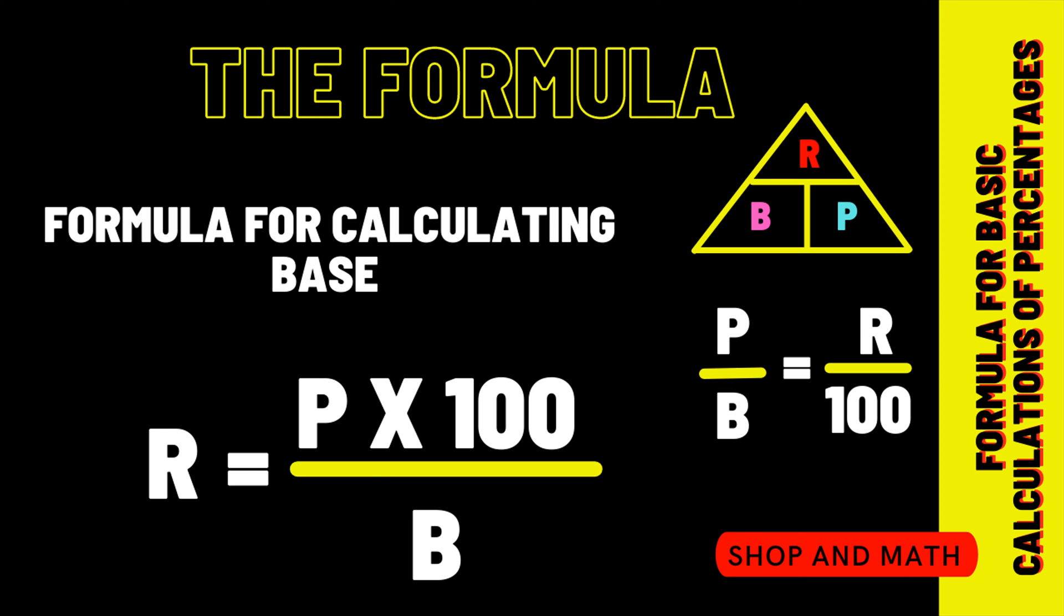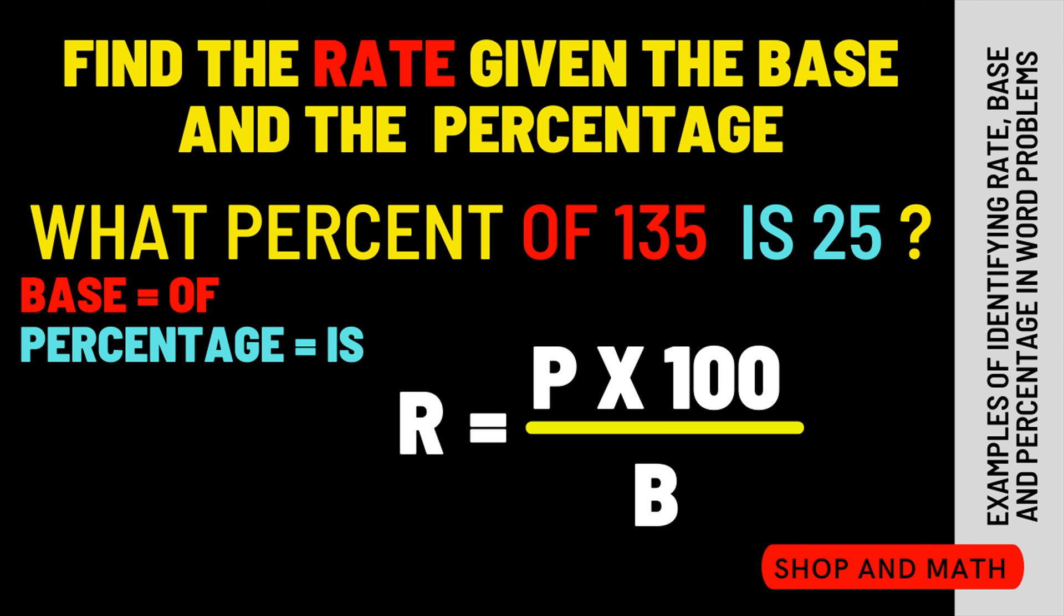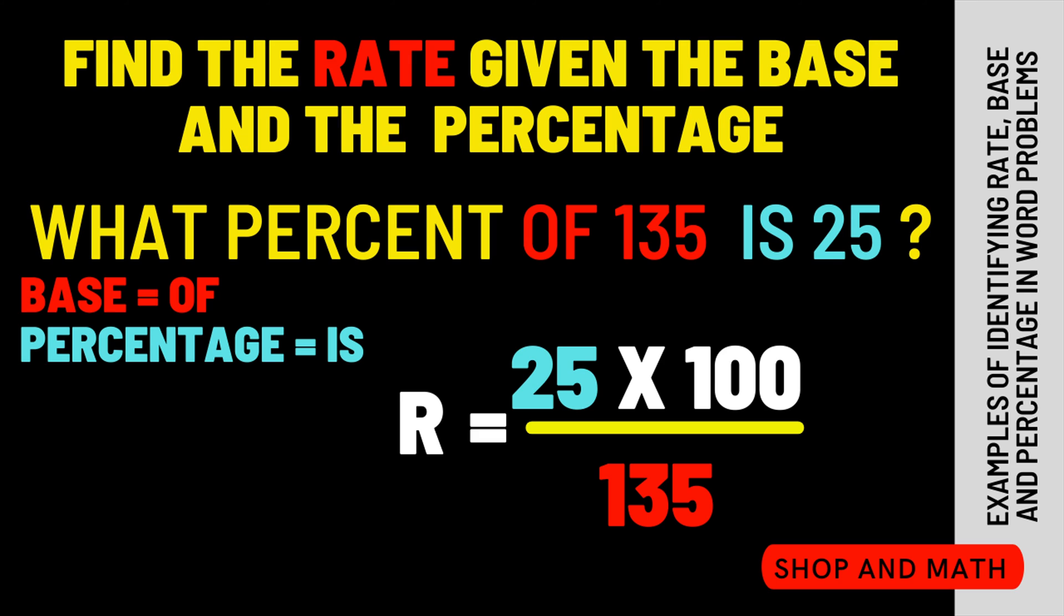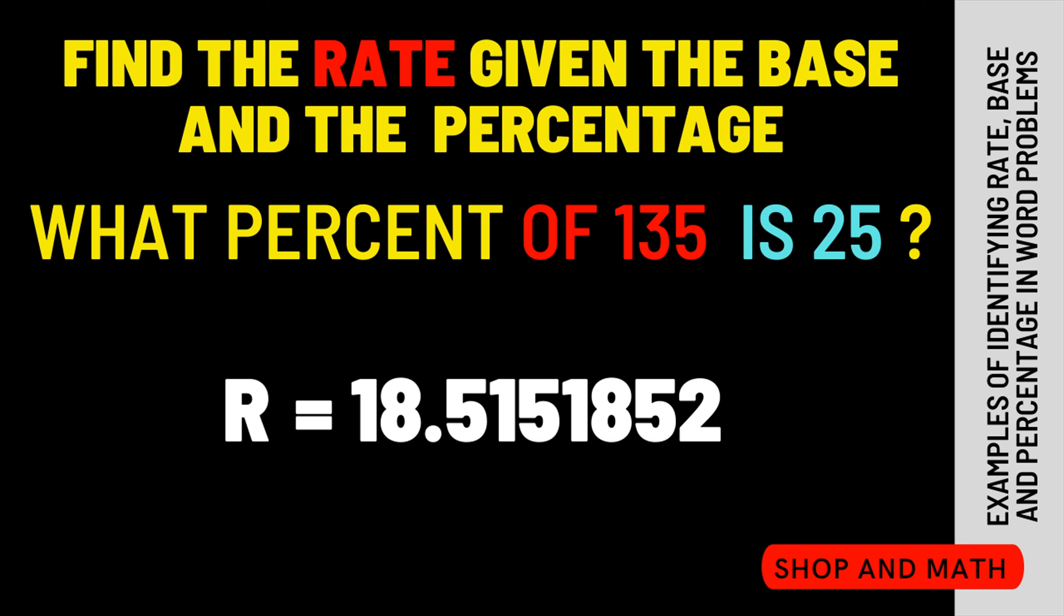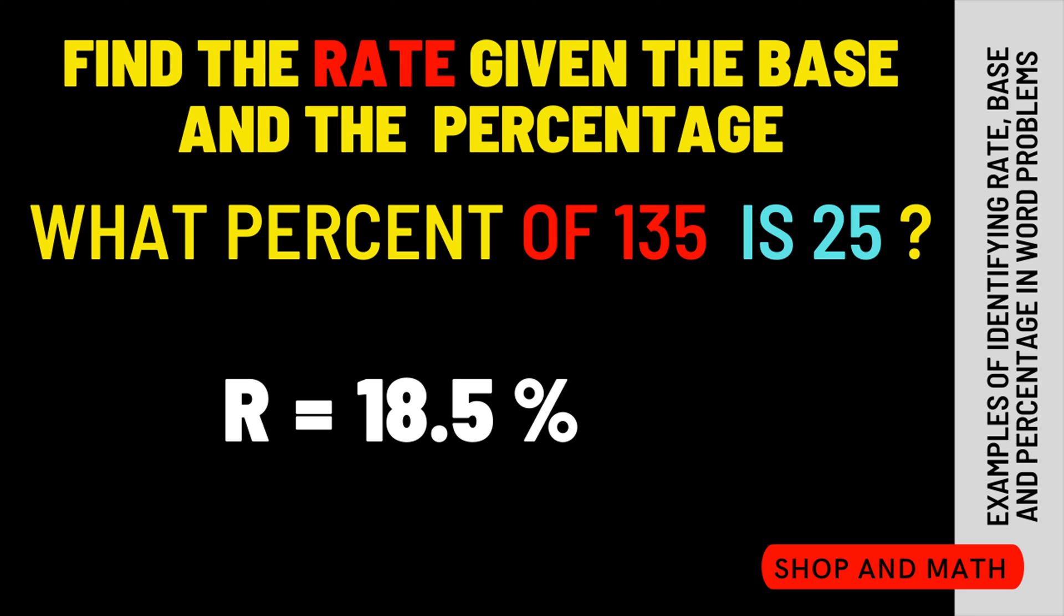This is the formula that we're going to use to calculate rate. Let's substitute our base. So therefore our base is 135. Now it's time to substitute our percentage. Our percentage is 25. So 25 times 100 is 2500. Divided by 135, our rate is 18.5151.